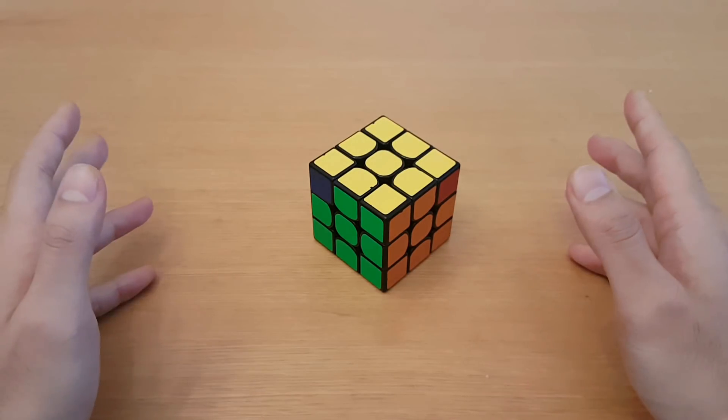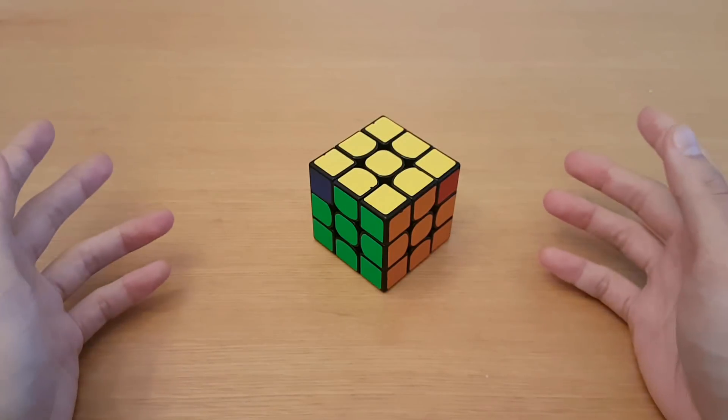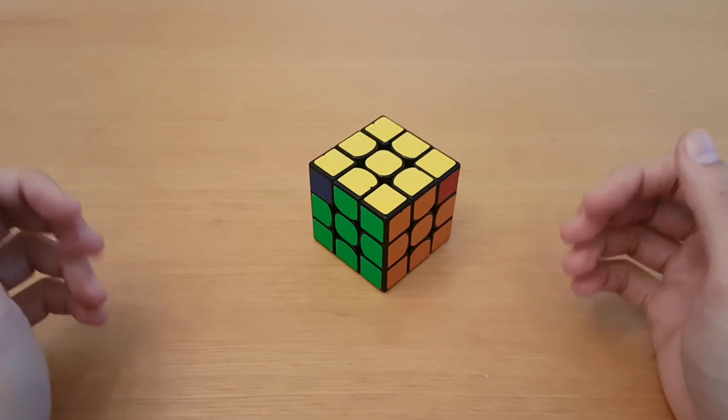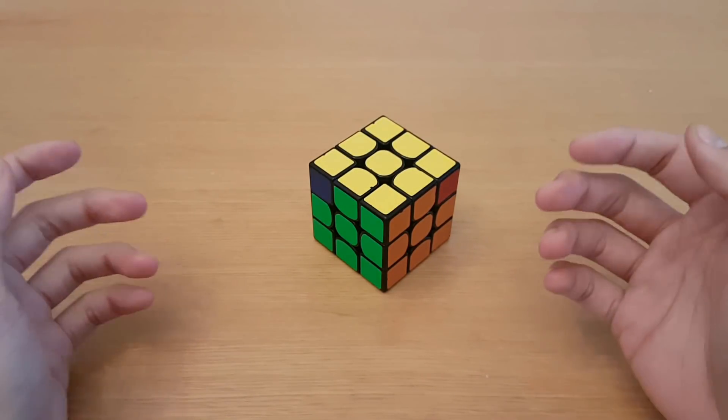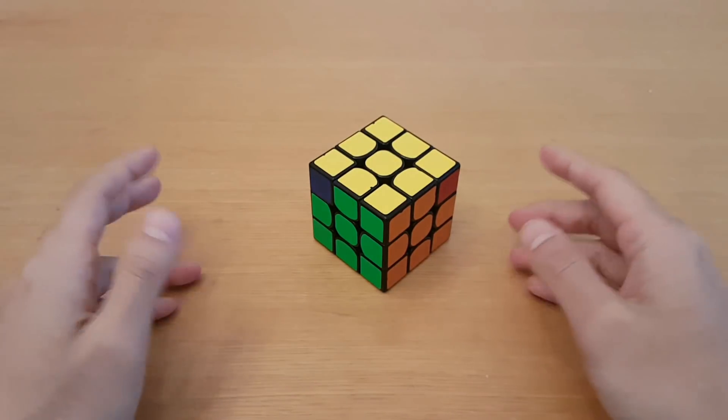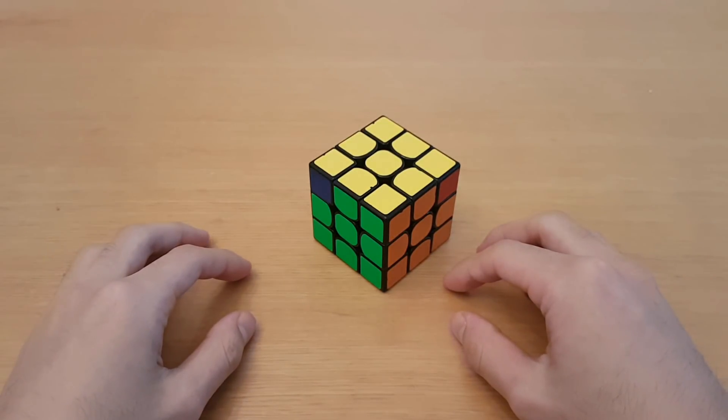All right, so those are all of the alternative V-perm algorithms that I think are worth trying out. Now if you think I missed any, you can leave it in the comments, and then if I like it, I'll add it to the description. All right, see you guys all next time, and I wish you no V-perms and many J-perms.